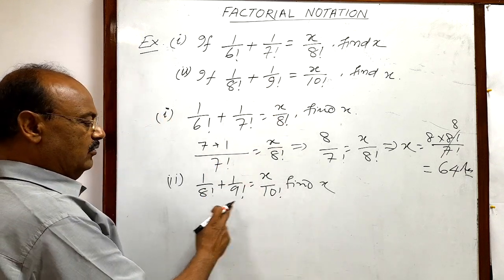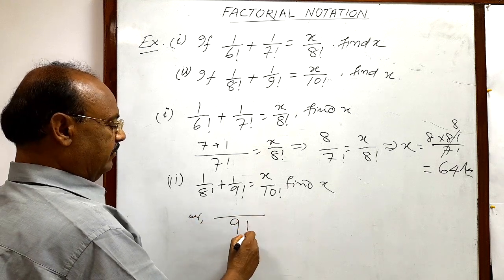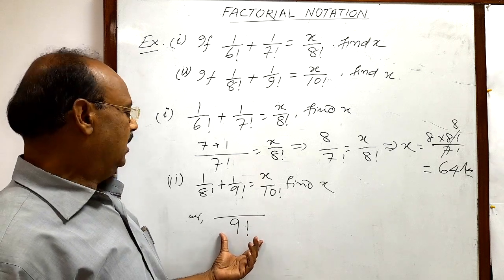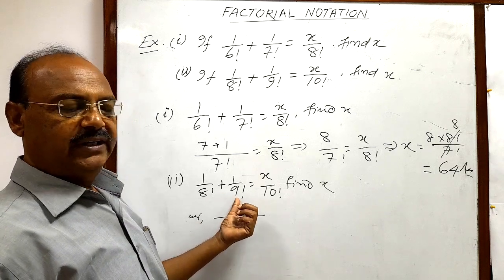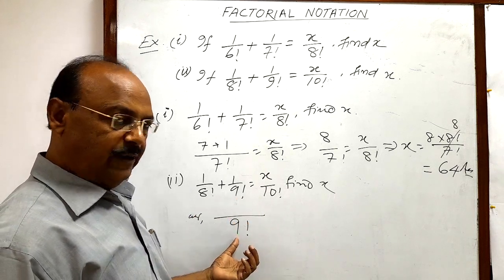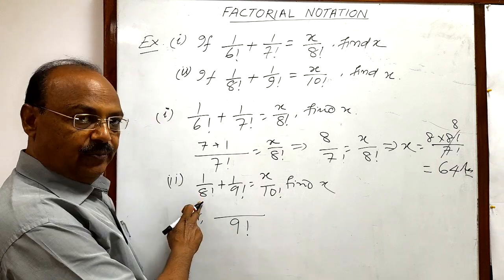In left hand side, whenever we will take the LCM of the denominators, we can write this will be 9 factorial. Because this LCM 9 factorial should be divisible by each of these two denominators. So clearly 9 factorial will be divided by 8 factorial as well as 9 factorial. And here whenever 9 factorial will be divided by this denominator,